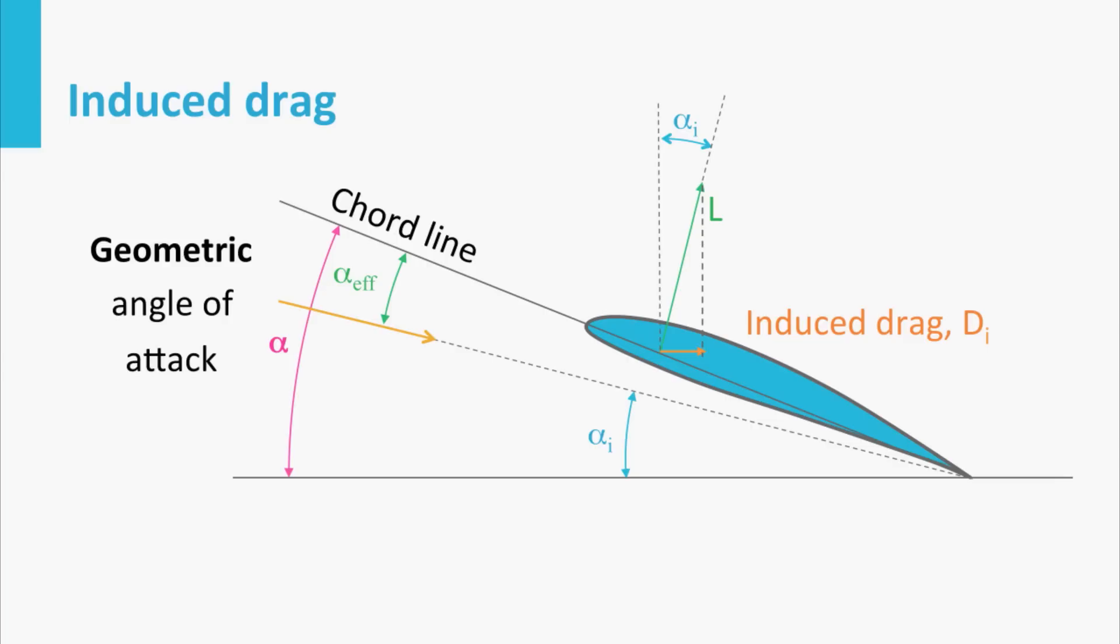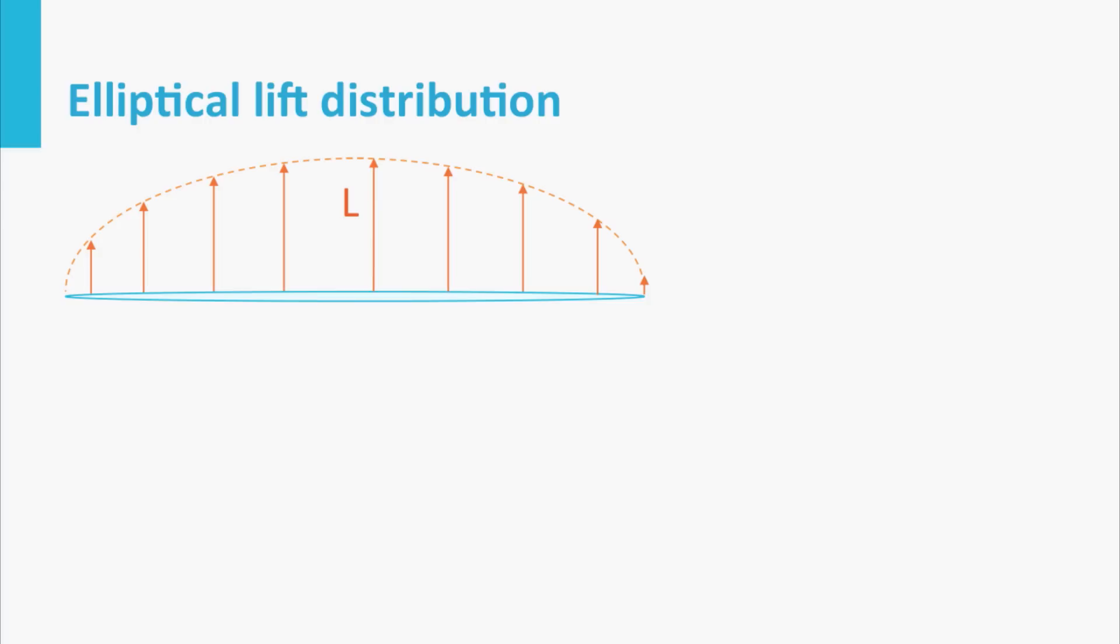So in fact, this is a drag component, called the induced drag Di. We can write Di is L times the sine of alpha i. For small angles alpha i, this may be written as D is L times alpha i. The angle alpha i is expressed in radians.